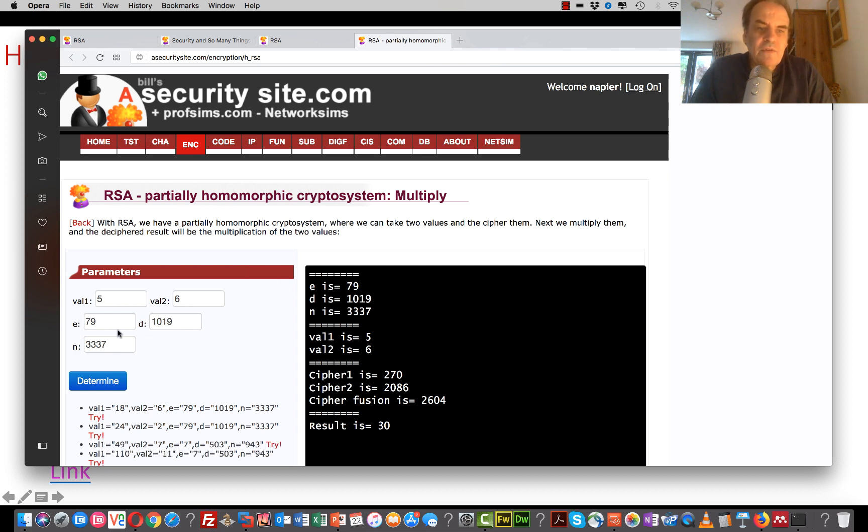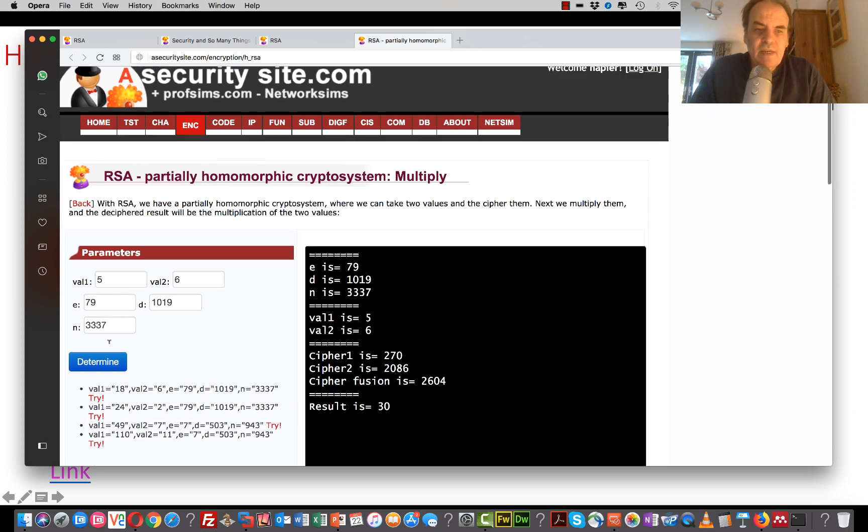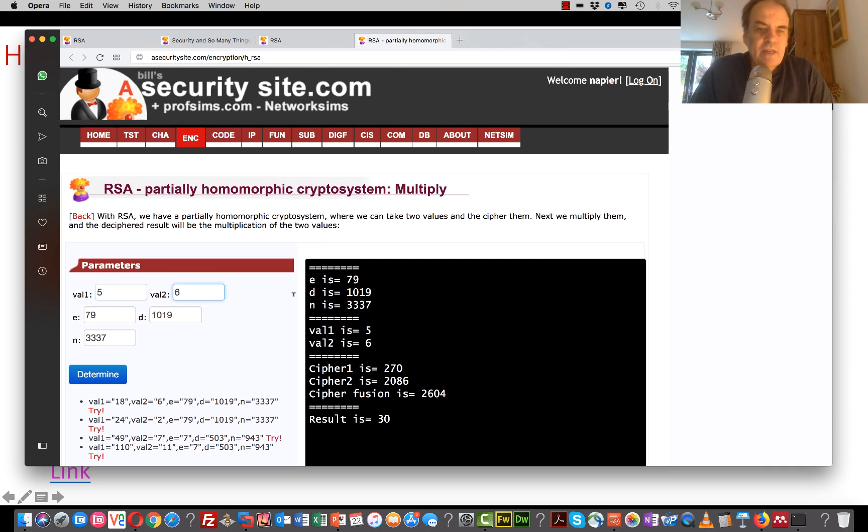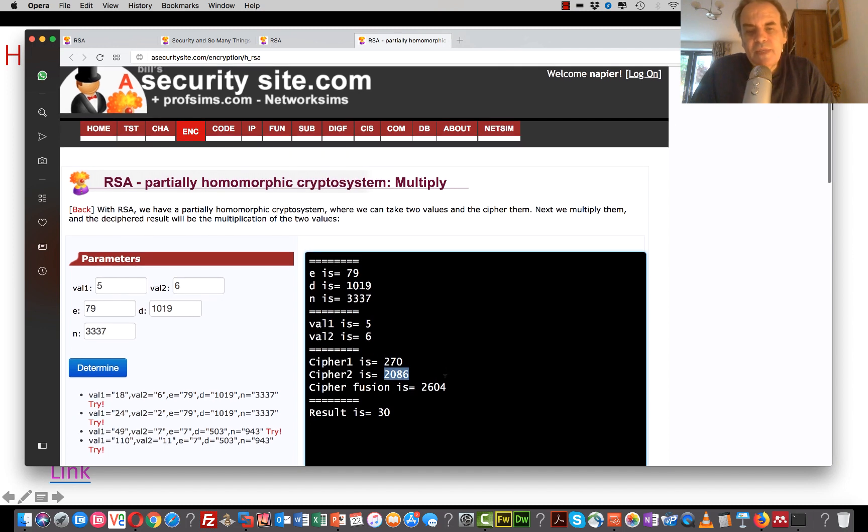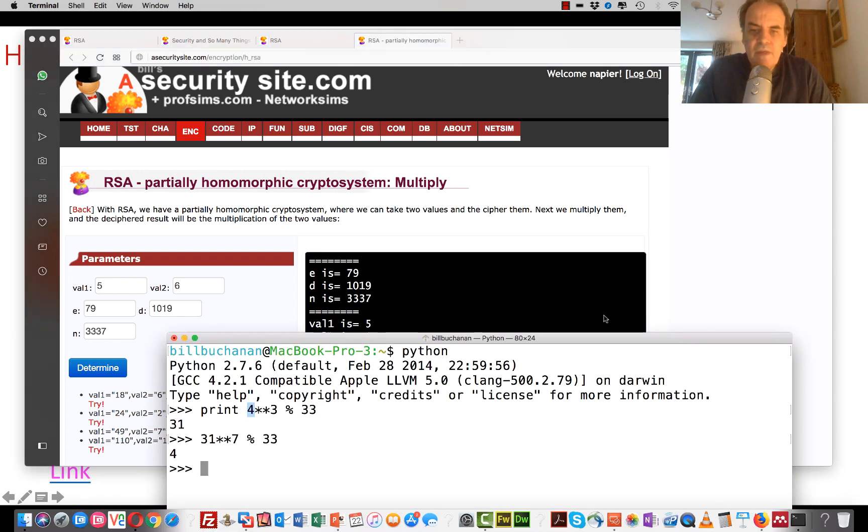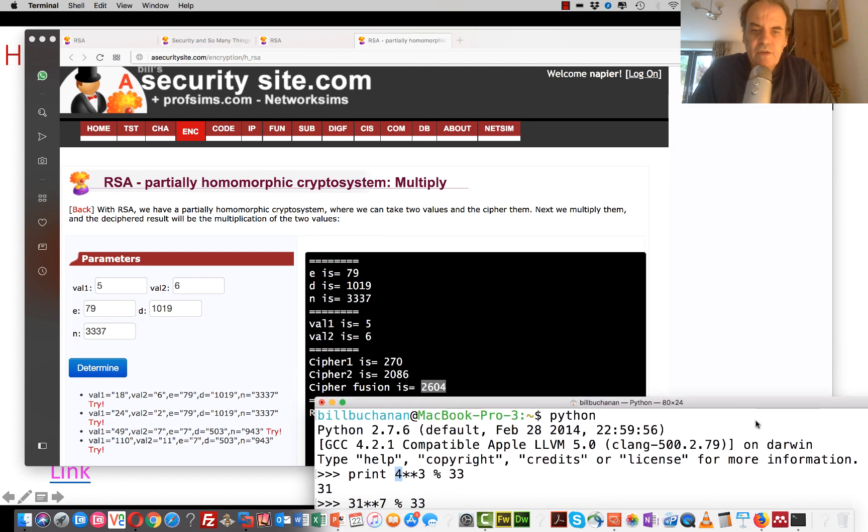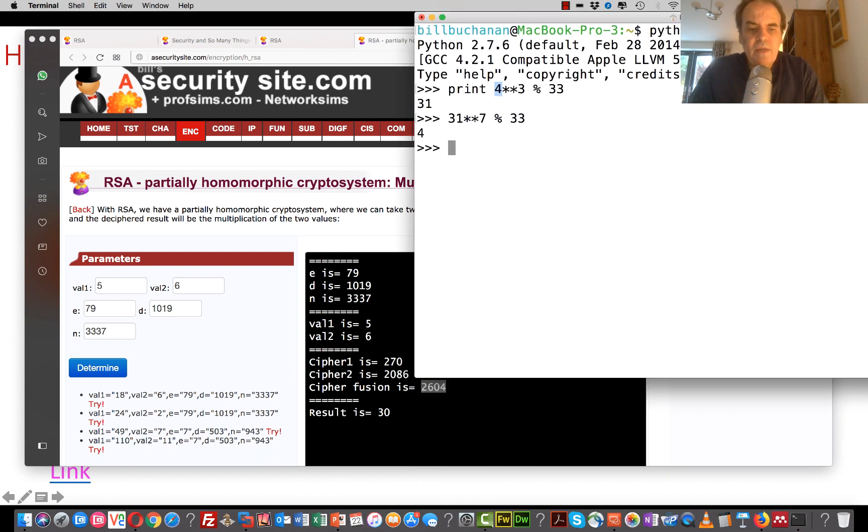Okay, so I've picked some values for an E value and a D value, which should work, and for an N value. Okay, and you can see here 5 times 6, when we cipher it, we get this and this. We basically multiply them together, and then we get that. And then when we take, if we want to do the calculation, if we take 2,604 to the power of a decryption value, which is 1019, and take mod of 33337, we get 30.